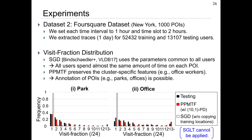Finally, we used a Foursquare dataset in New York and evaluated the visit fraction distribution. We evaluated PPMTF with (10,1)-PD and SCD. We did not evaluate SGLT because it cannot be applied to this large dataset. We can see that in SCD, all users spend almost the same amount of time on each POI because SCD uses parameters common to all users, so it cannot preserve the visit fraction distribution. In contrast, PPMTF preserves cluster-specific features such as office workers, so it preserves the visit fraction distribution, and annotation of POIs such as park and office is possible.